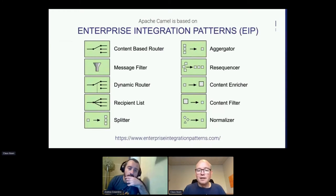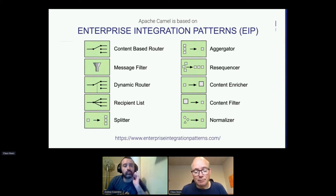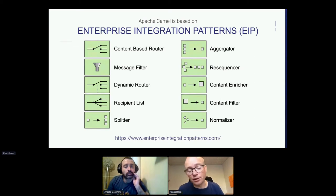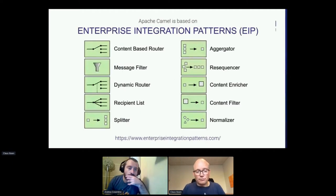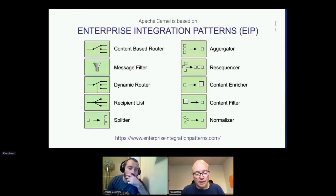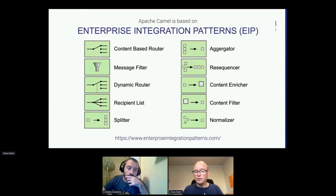There is actually a known set of solutions called integration patterns, or Enterprise Integration Patterns — EIP for short. They come from a book with that same title, published 15 years ago. The authors, Gregor Hohpe and Bobby Woolf, were consultants who saw the same integration and messaging problems occur over and over again. They wrote down these problems and how to solve them, and formalized that into a book. This is the integration Bible — still relevant today, unlike many IT books.